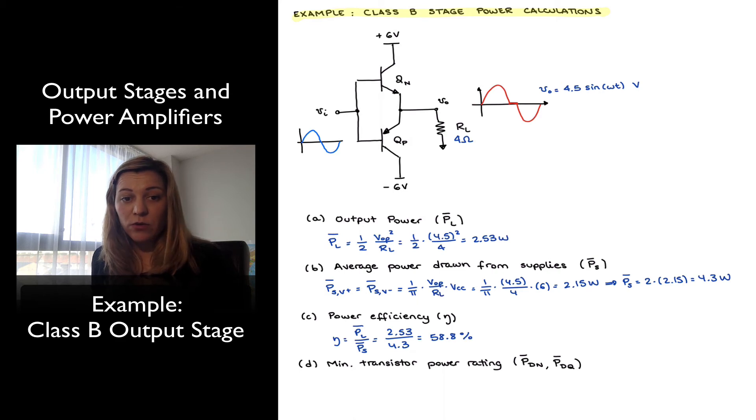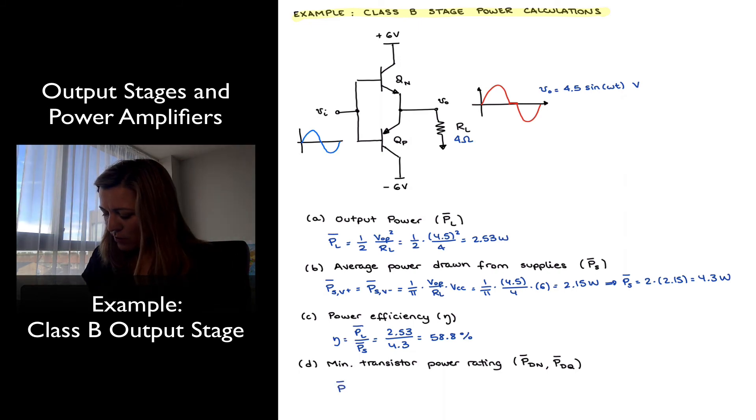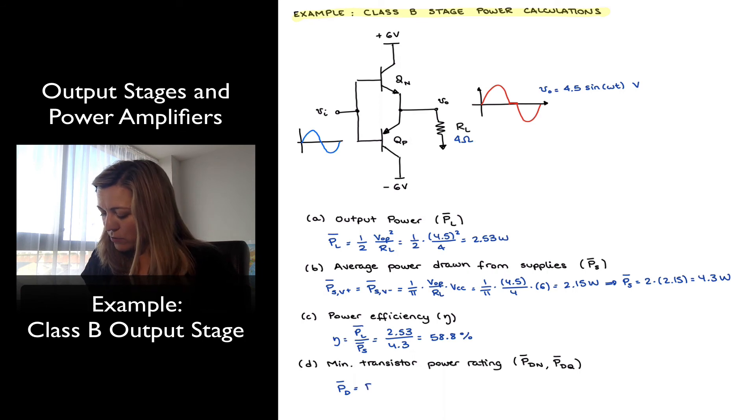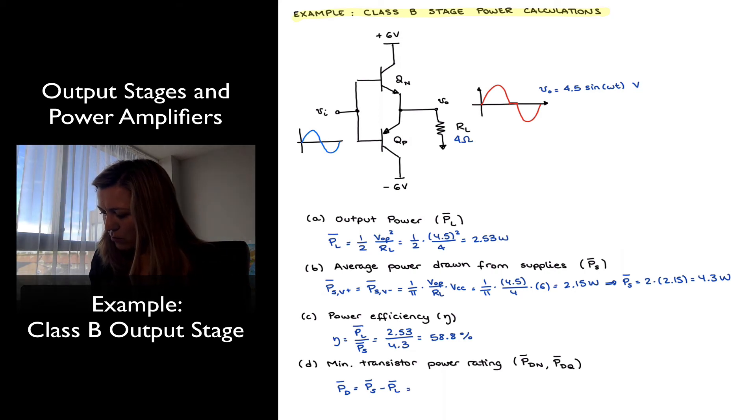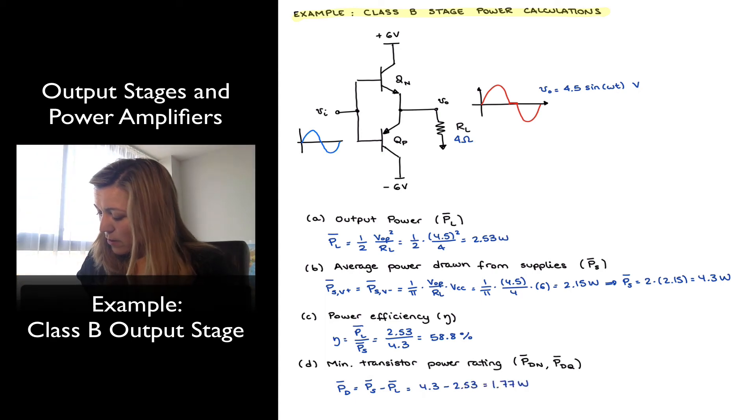The final thing is, if I wanted to select transistors for this particular application, I would want to know what's the minimum power rating of my transistors for them to work under these conditions. The power dissipated in the transistors is going to be equal to the difference between the power provided by the supplies and the power delivered to the load. So it's going to be equal to 4.3 minus 2.53, or 1.77 watts. That's the average power dissipated on both transistors over an entire cycle.